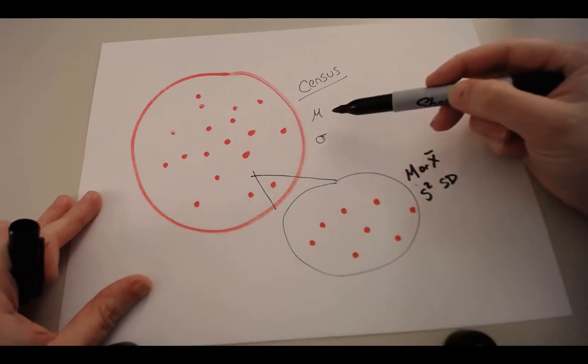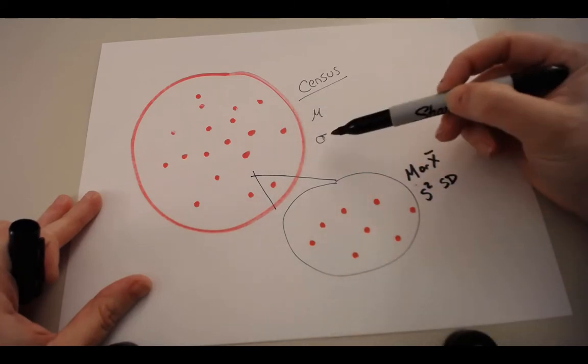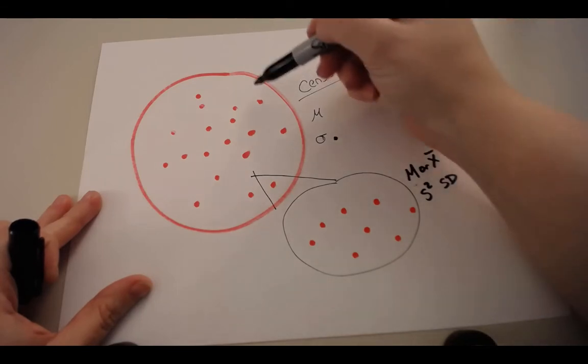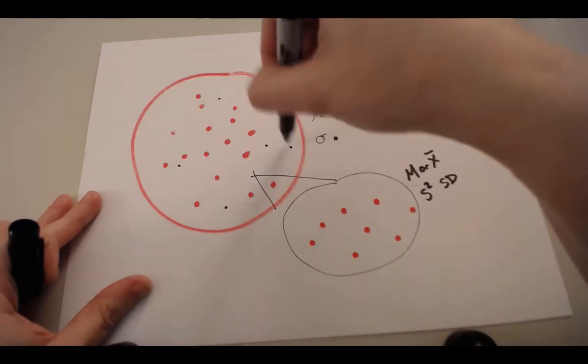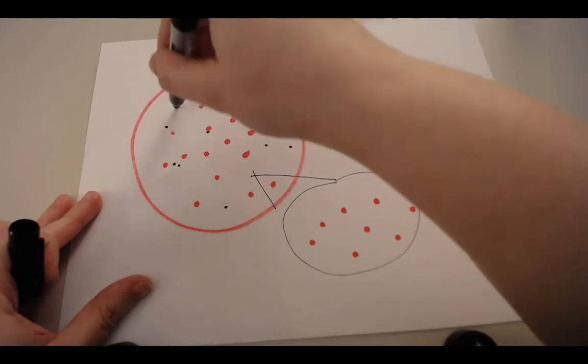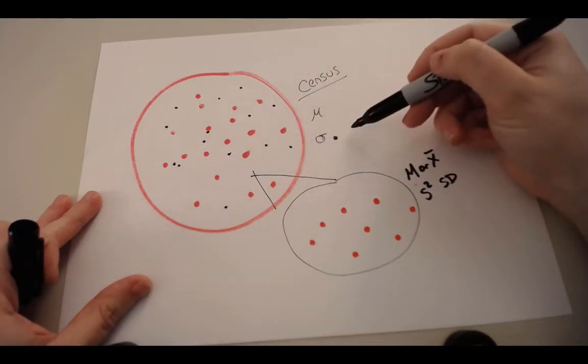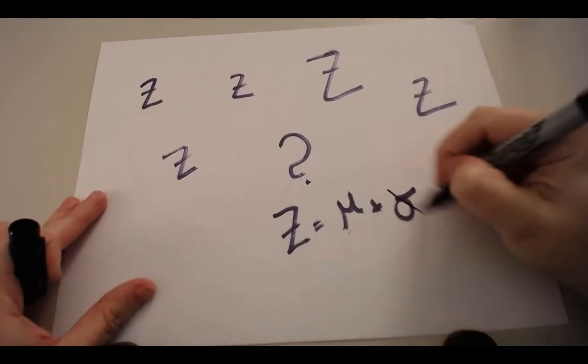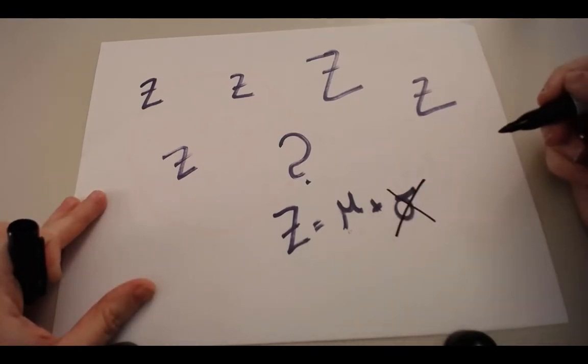Even when we find sometimes an average for a population, it's very hard to find the variance. Because without every single one of these scores, I can't calculate a variance. So that's why we can't use z-scores, is because we often don't have this.